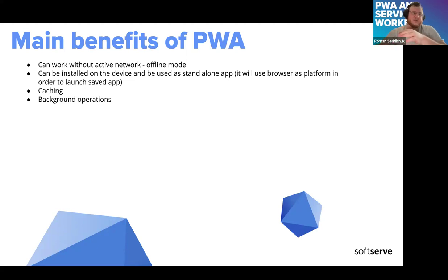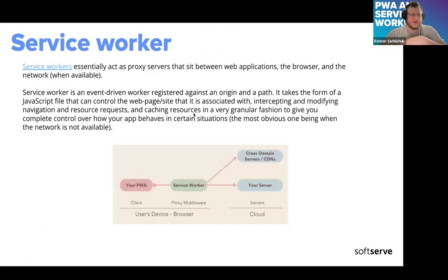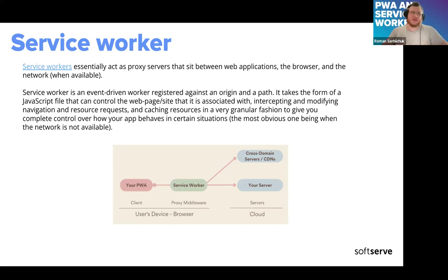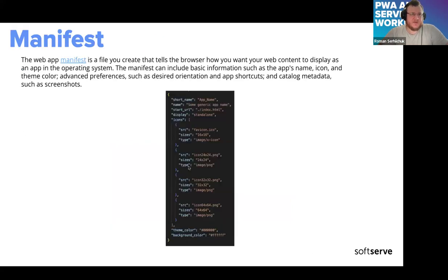For the sake of this meeting, we'll be focusing on caching strategies. A service worker is basically like a proxy middleware that operates between your web application and network activity. When a web application tries to make a network request, the service worker intercepts those requests and based on configuration decides whether to provide data from the network or from the cache.